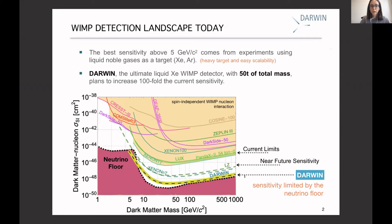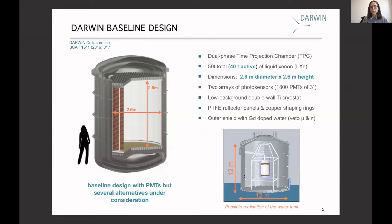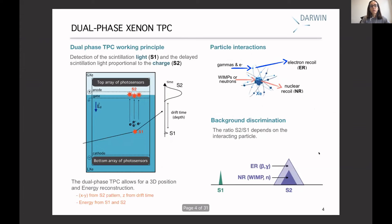I would like to show you the DARWIN baseline design. DARWIN will be a time projection chamber — in particular, a dual-phase TPC. In total, DARWIN will have 50 tons of liquid xenon, and inside the TPC the active volume will be 40 tons. The dimensions of the TPC will be 2.6 meters in diameter and 2.6 meters in height. The idea is to have two arrays of photosensors at the bottom and at the top — in this baseline scenario we are considering PMTs, though silicon photomultipliers are also under consideration. The TPC will be in a low-background double-walled cryostat, placed underground in a water tank for shielding.